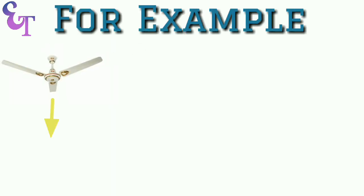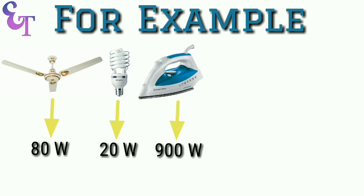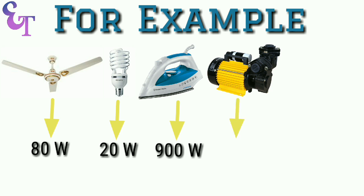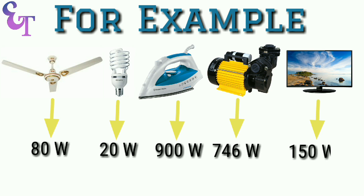For example, ceiling fan power is 80 watts. CFL power is 20 watts. Iron power is 900 watts. One horsepower motor is 746 watts and television power is 150 watts.